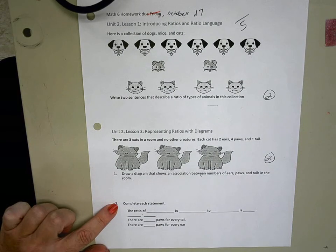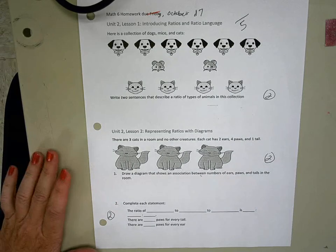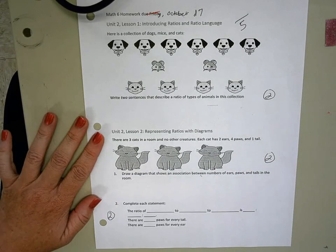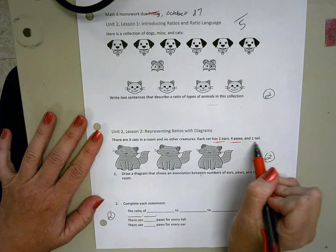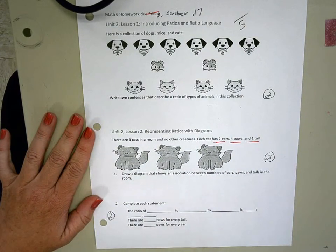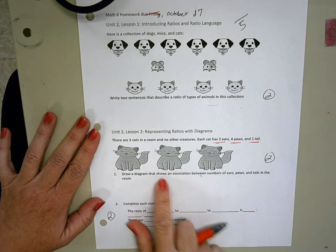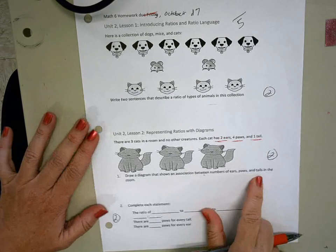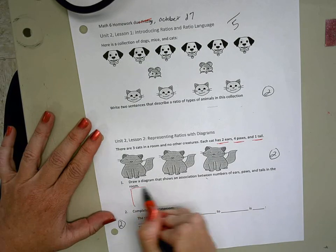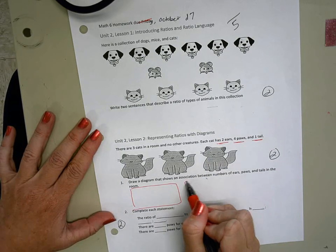Okay, so there are three cats in a room, no other creatures. Each cat has two ears, four paws, and one tail. Draw a diagram that shows the association between ears and paws and tails. So this is like one of those examples of batches.